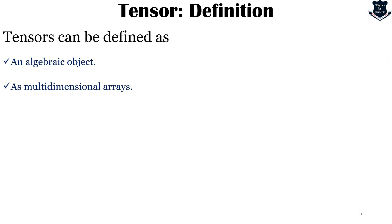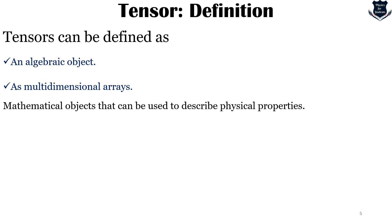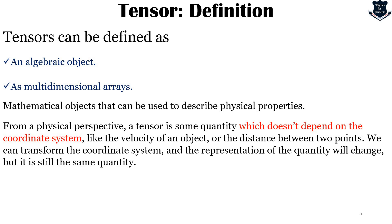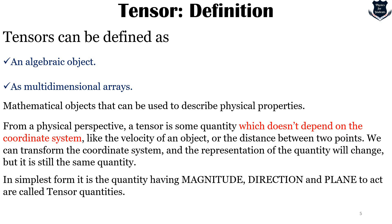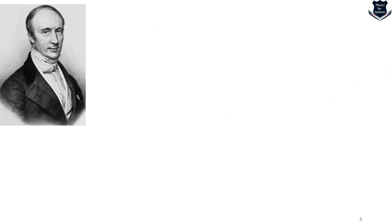Tensors can be defined as algebraic objects which have multidimensional arrays — mathematical objects that can be described to have certain special physical properties. From a physical perspective, a tensor is some quantity which does not depend on the coordinate system, like the velocity of an object or the distance between two points. It can be transformed in the coordinate system and the representation of the quantity will change, but it is still the same quantity. We know vectors have magnitude and direction, but tensors also have the plane on which the force is acting. This is a basic definition since the objective of this video is to give you a study guide and the best books on tensors.